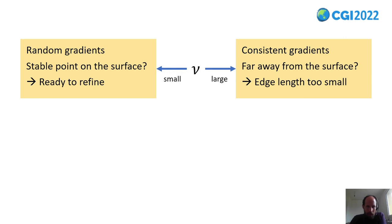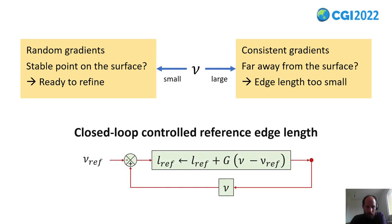As we have seen, nu is a quite good sensor to decide if our triangle size is too small or too large. The solution is to add a closed-loop controller to update the triangle size using the relative velocity.